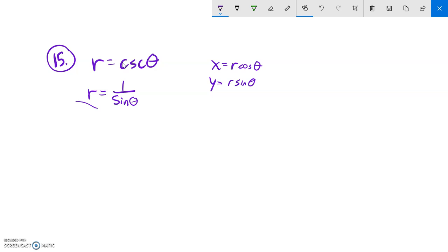Let's multiply both sides by sine to get it out of the denominator. So on the left hand side I just have r times sine theta.